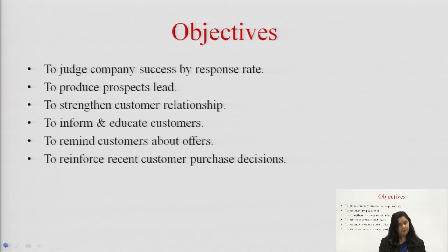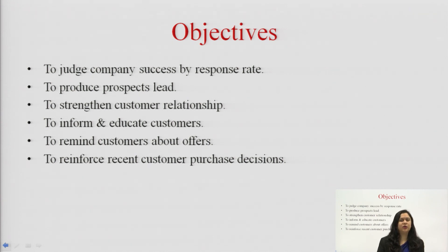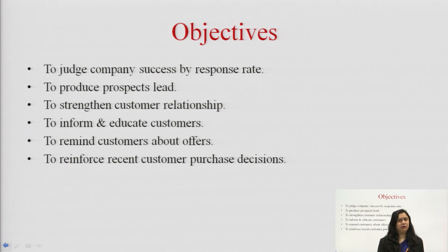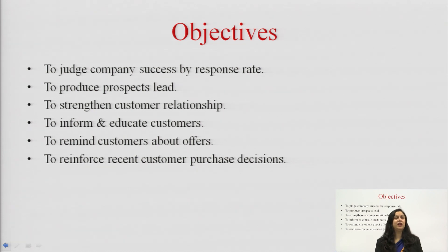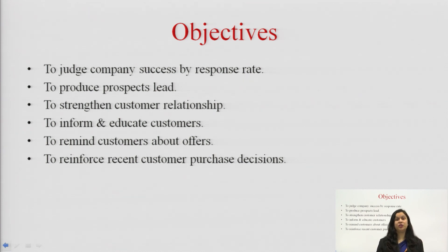Next is the objective. What is the objective of direct marketing? The objective is to judge company success by response rate — it is basically based on the consumer response. Next is to prospect leads with the help of catalog, mailing response rate, and consumer response. The marketer can get to know who is the actual prospect, who is interested in their product, which can help in segmentation and positioning too.